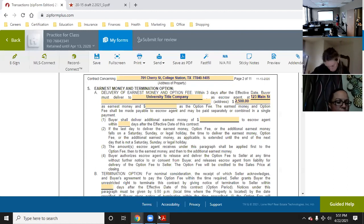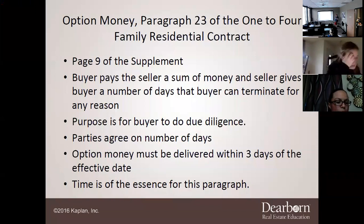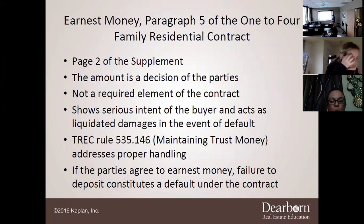Since the contract is changing, it's a bit hard to figure out what order to use. So here's option money — this was Paragraph 23, but is now also in Paragraph 5. That's why I'm trying to figure out how to jump around. The option money is now also in Paragraph 5.